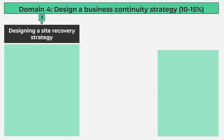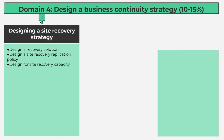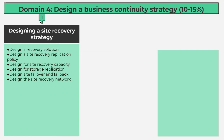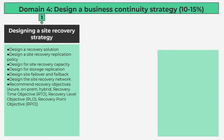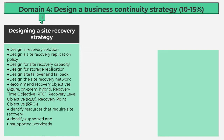Number 1, Designing a Site Recovery Strategy contains 10 subtopics: design a recovery solution; design a site recovery replication policy; design for site recovery capacity; design for storage replication; design site failover and failback; design the site recovery network; recommend recovery objectives for Azure, on-prem, and hybrid environments including recovery time objective and recovery point objective; identify resources that require site recovery; identify supported and unsupported workloads; recommend a geographical distribution strategy.